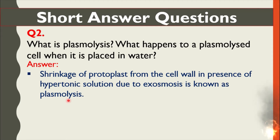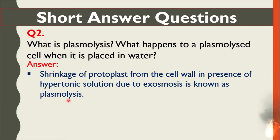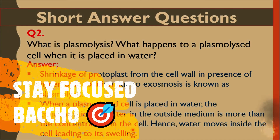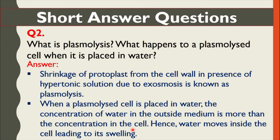It is a natural process in plants. Plasmolysis occurs naturally when a plant does not get water. When a plasmolyzed cell is placed in water, the concentration of water in the outside medium is more than the concentration inside the cell. Hence, water moves inside the cell, leading to its swelling.